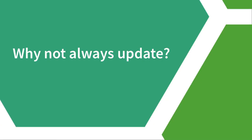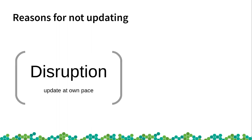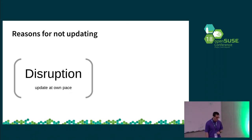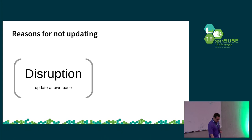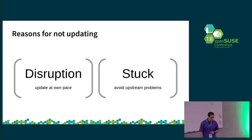Possibly the first question that needs to be answered is: why not just always update? Because I imagine that's what most people do currently. There are two main reasons for not updating. The first one is disruption — updating can take a fair amount of time if all you actually want is to install some missing library or an application. And being stuck — there are problems that occur in Tumbleweed that affect some users more than others. We've had various kernel driver issues that would cause black and white screens, things like that that you want to avoid.